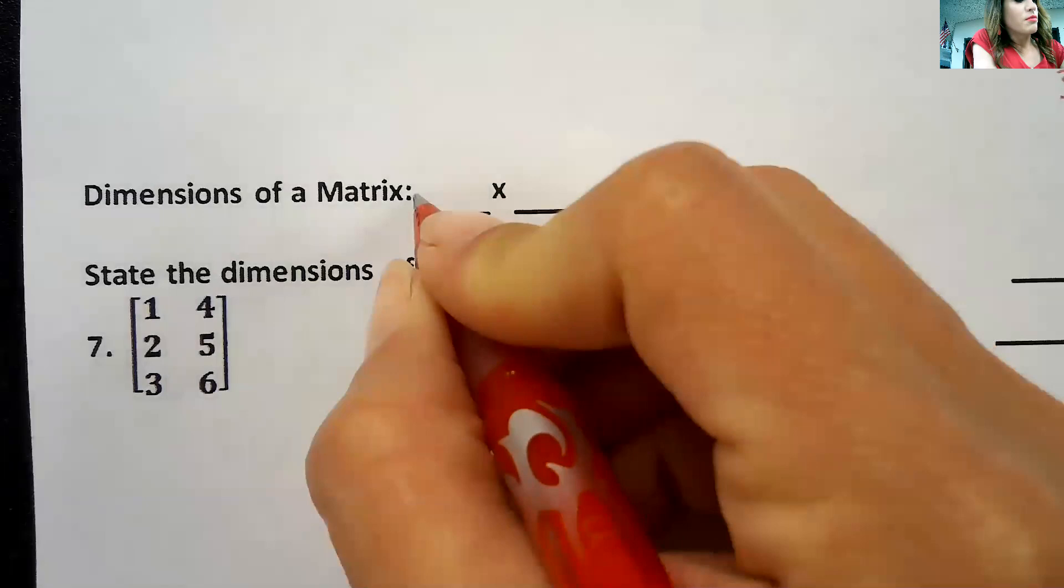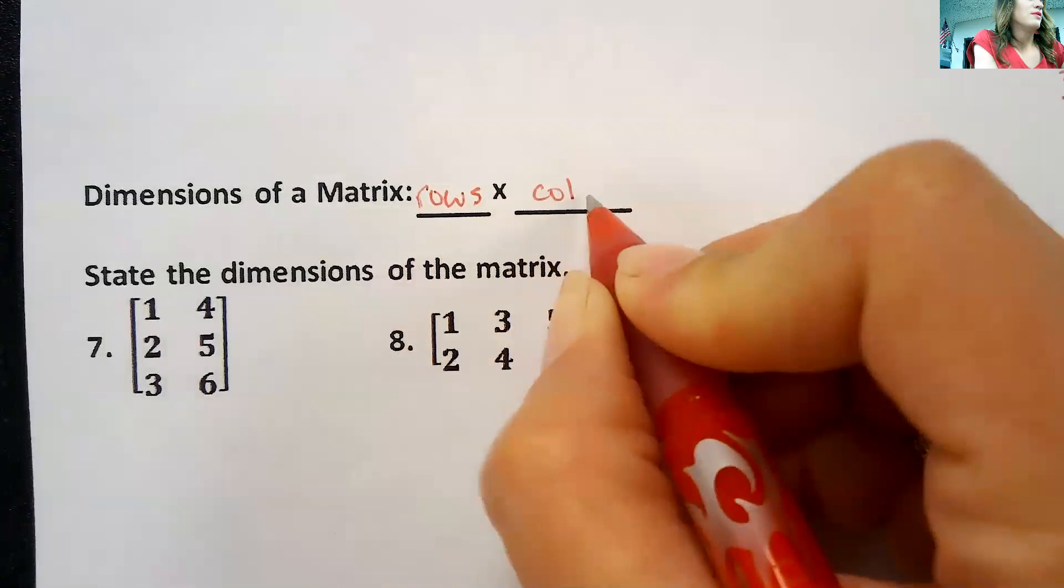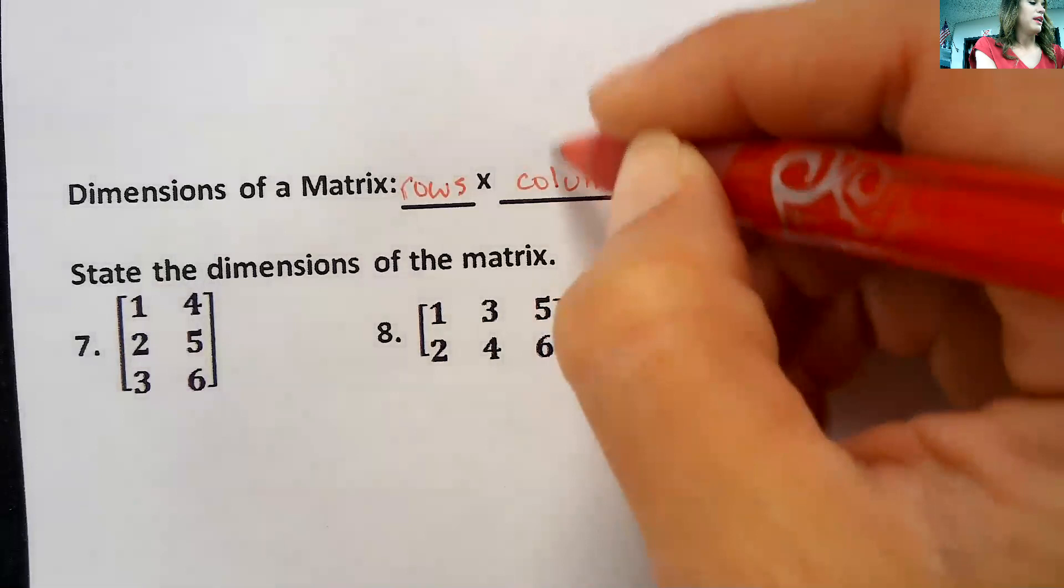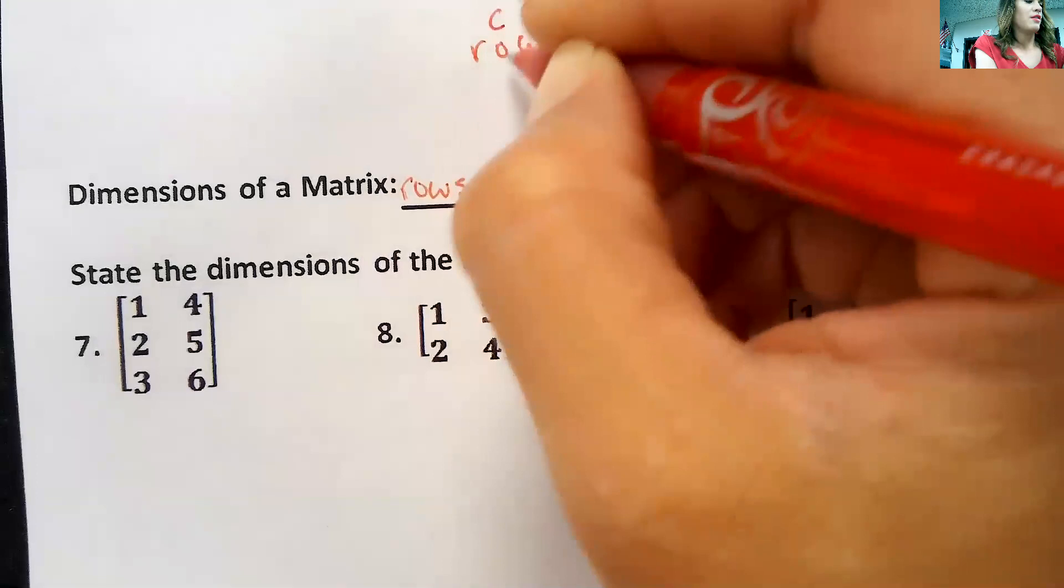Rows by columns. You think of a column, you think of a post going up and down on the house. Columns go up and down, rows go sideways. So rows are this way, columns are this way.